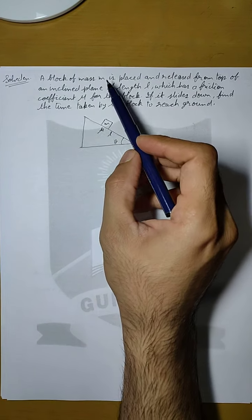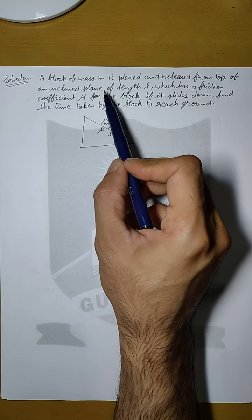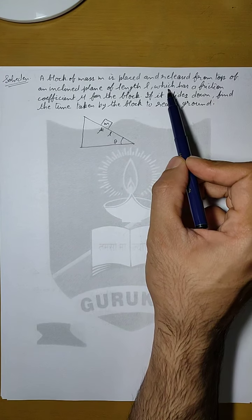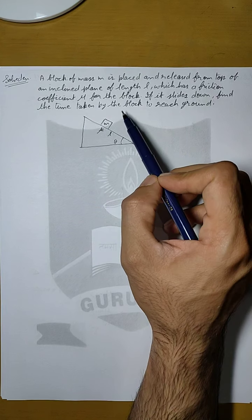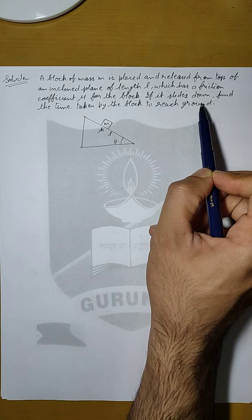In this question, a block of mass M is placed and released from top of an inclined plane of length L, which has a friction coefficient mu for the block. If it slides down, find the time taken by the block to reach the ground.